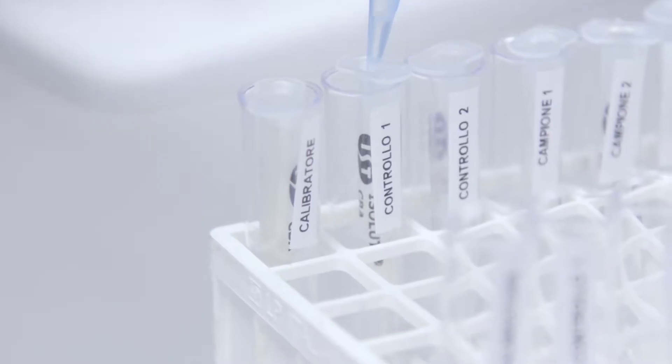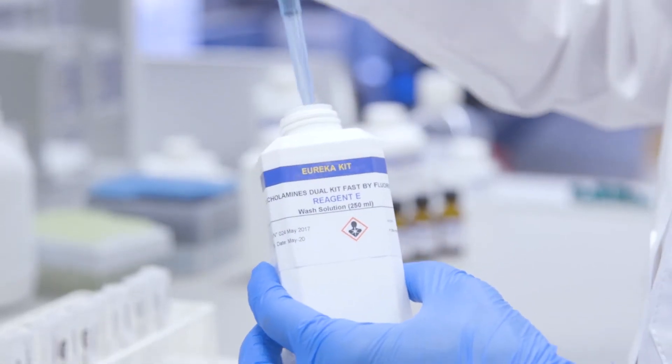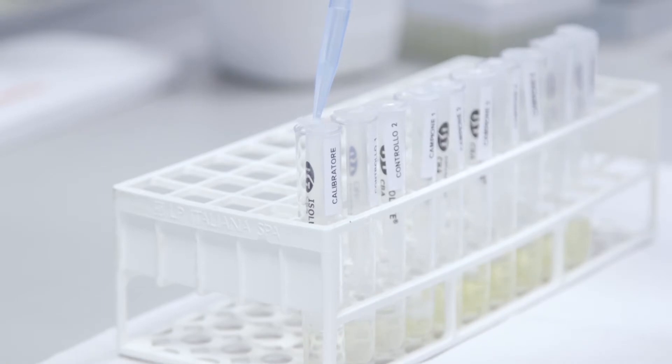Let it slowly percolate at a flow of approximately 1 milliliter per minute. At this point, we wash the column by adding 1 milliliter of reagent E washing solution and repeat this operation twice.